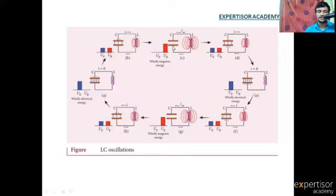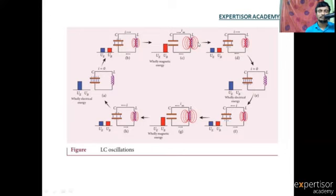When the charge is zero, the inductor current is at its maximum. Automatically, a magnetic field is generated. We can say that the circuit contains only magnetic energy at this point, represented as L i squared by 2.